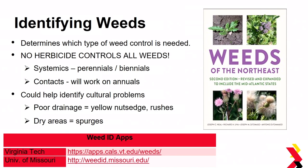If you have a lot of dry areas, you might see a lot of spurges. There are a lot of good resources for identifying weeds — weed ID guides such as the new edition of Weeds of the Northeast, a very useful book available on Amazon. There are also weed ID apps available; two that I use most are from Virginia Tech and the University of Missouri.